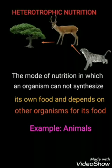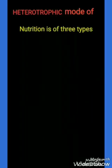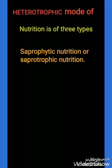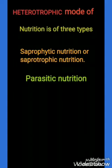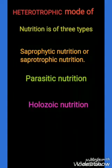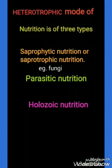Those organisms which cannot synthesize their own food are known as heterotrophs. Heterotrophic nutrition is of three types: saprophytic nutrition, parasitic nutrition, and holozoic nutrition. In saprophytic nutrition, the organism obtains its food from dead and decaying plants and animals — for example, fungi and yeast.